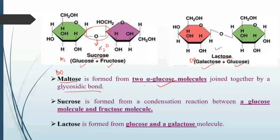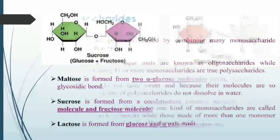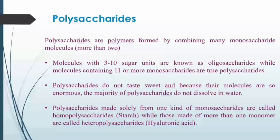Maltose is made from two glucose molecules joined by a glycosidic bond. Sucrose is made up of glucose and fructose. Lactose is made up of glucose and galactose, and is present in milk.